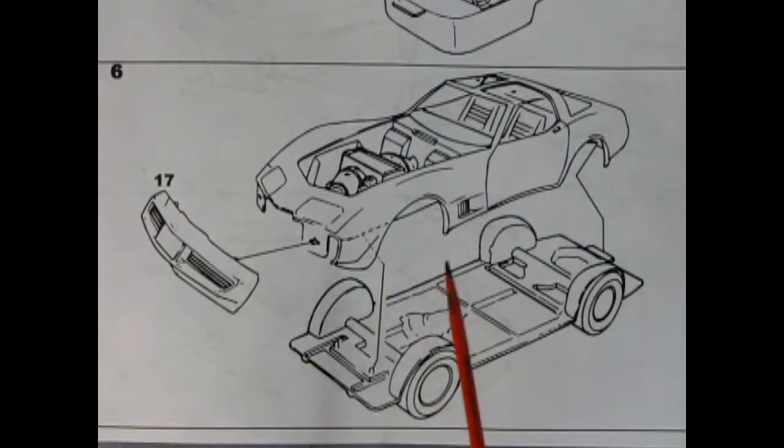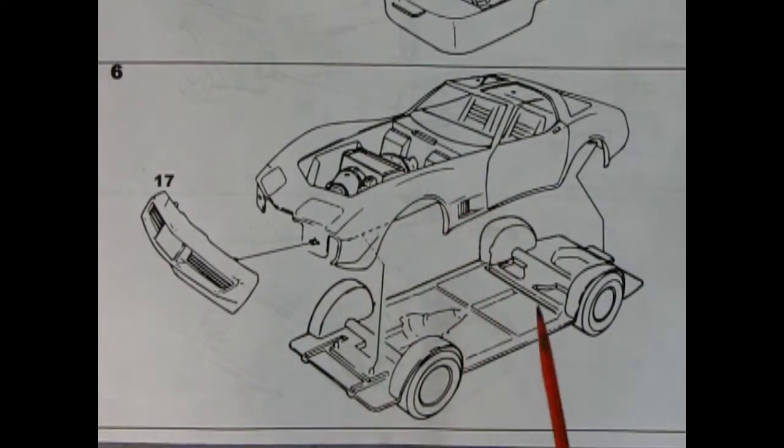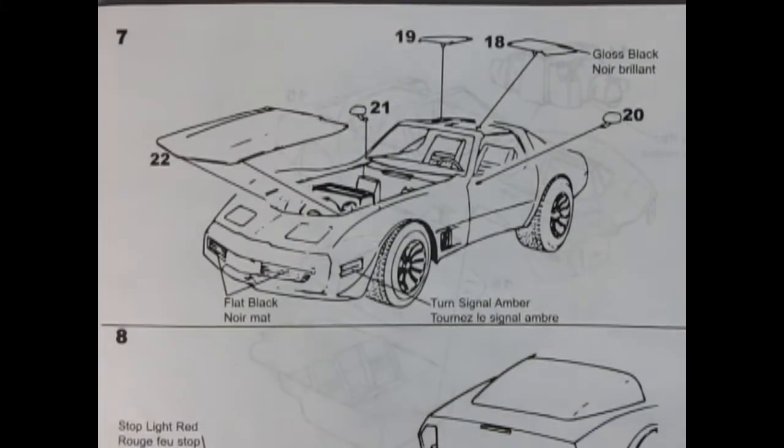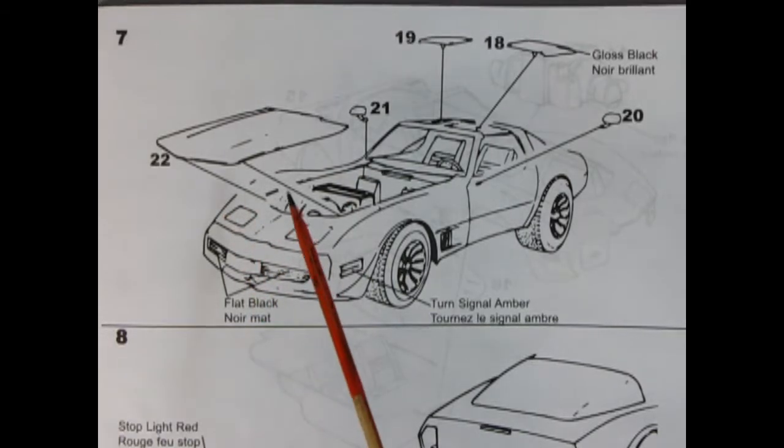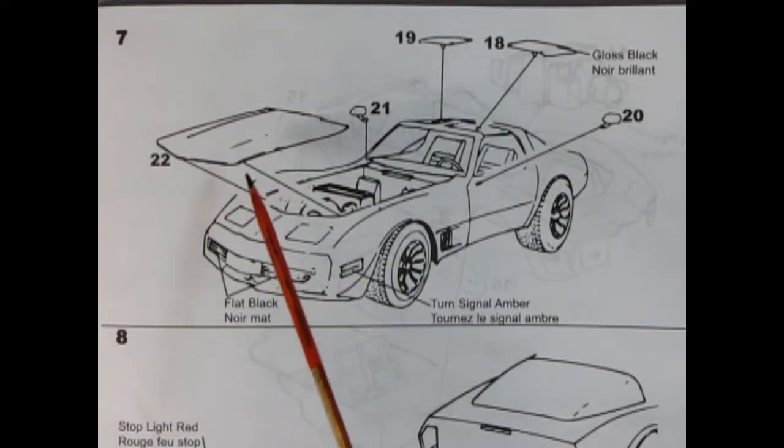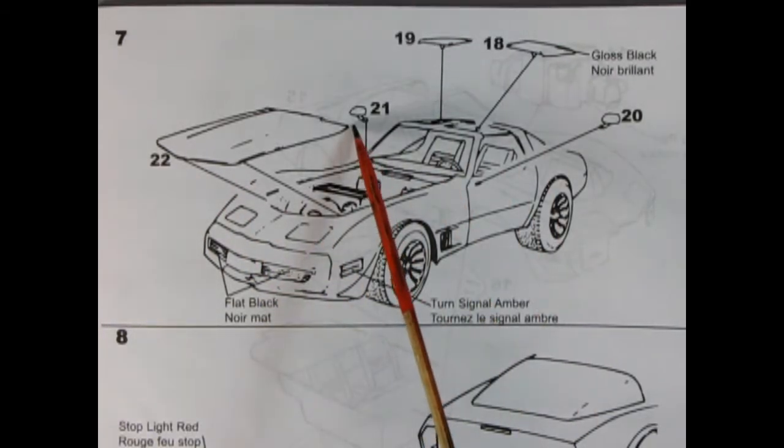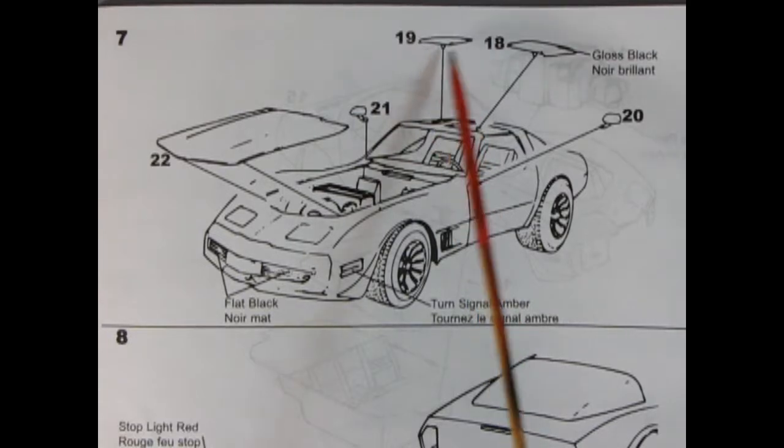Panel 6 shows our assembled body and engine bay dropping right onto the chassis and then you push that front clip right into those little holes there. Panel 7 shows our hood going into place. This one goes in much like the Monogram type hoods with the two little holes on each side so be careful there. There's our side mirrors and our t-tops.